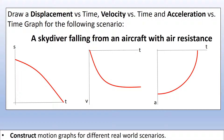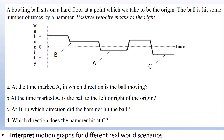Now let's look at some different scenarios. We have a bowling ball on a hard floor that has been hit a number of times by a hammer. When we say the velocity is positive, that means it's moving to the right. Pause the video and have a go at answering the four questions about the velocity-time graph shown.